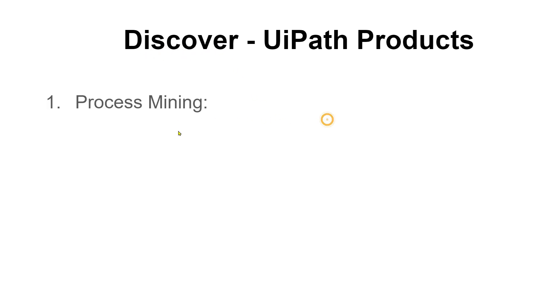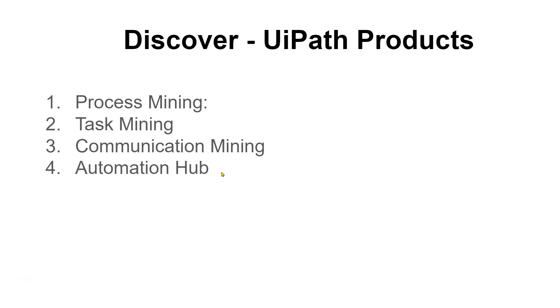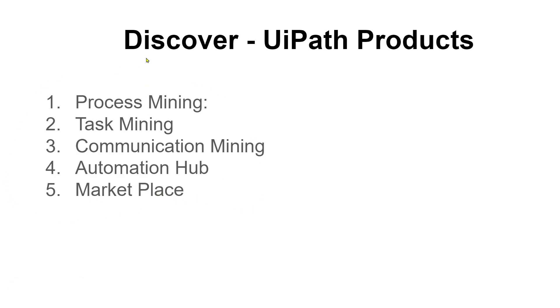In UiPath there are three categories of products. The first category is called Discover. Under Discover, the tools are: Process Mining, Task Mining, and Communication Mining — those are the three mining products — then Automation Hub and Marketplace. So these are the five products that come under Discover.